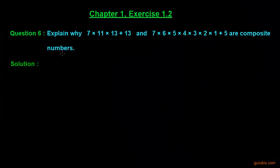Let us solve a very interesting question, question number 6 of exercise 1.2 of chapter 1. This question says explain why 7×11×13 + 13 and 7×6×5×4×3×2×1 + 5 are composite numbers. Let us see how to explain it.